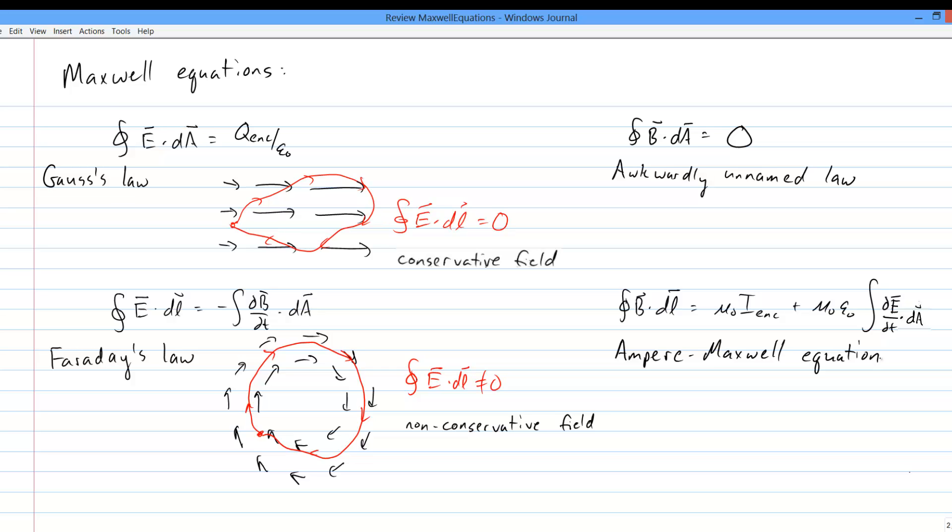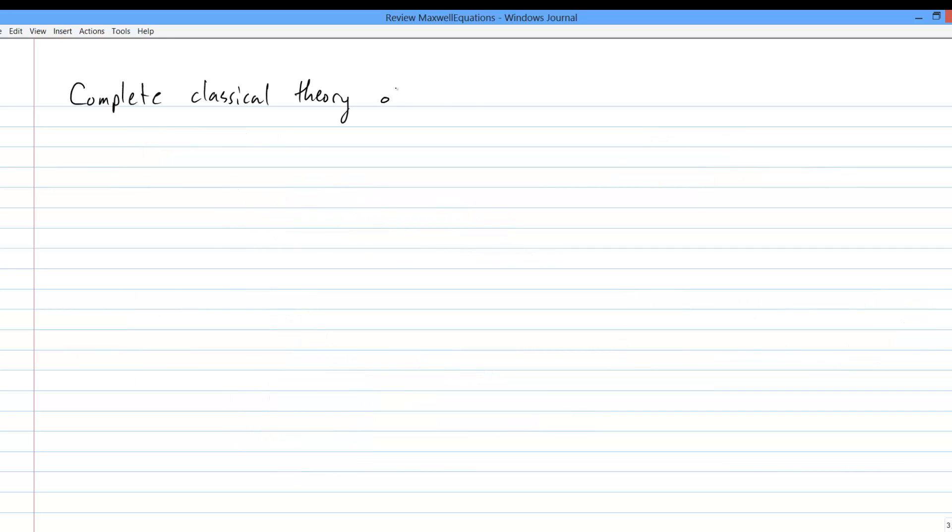Ultimately, all E and B fields come from charges, either stationary or moving. Putting it all together, the Maxwell equations plus the Lorentz force law are the complete classical theory of electromagnetism. Everything else can be derived from these five equations.